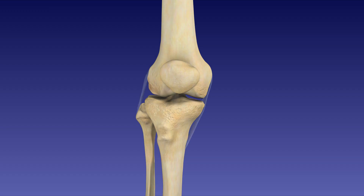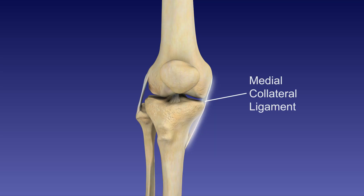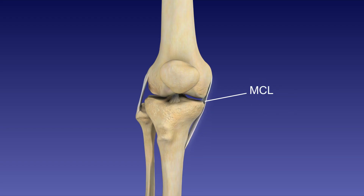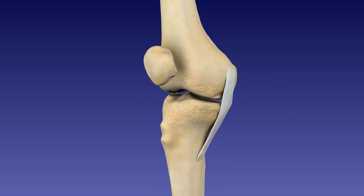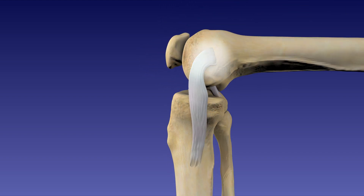There are several important ligaments that connect and stabilize the femur, tibia, and fibula to maintain normal joint function. The two collateral ligaments stabilize the joint in the coronal plane. This is the medial collateral ligament, or MCL. It connects the medial epicondyle of the femur to the medial condyle and surface of the tibia.